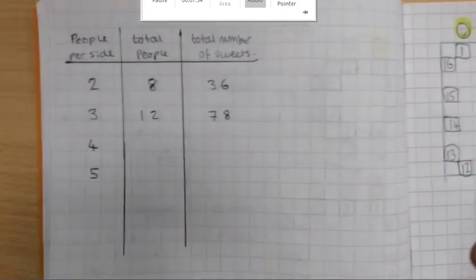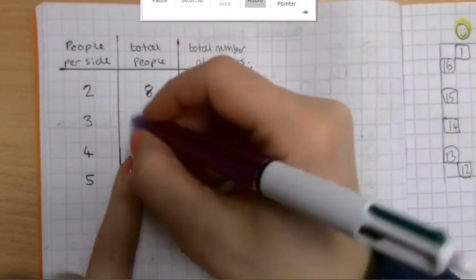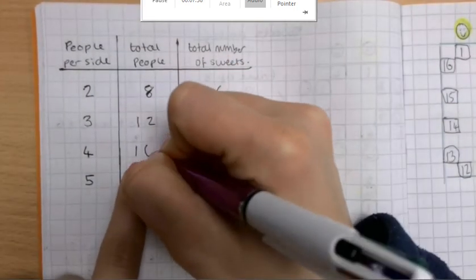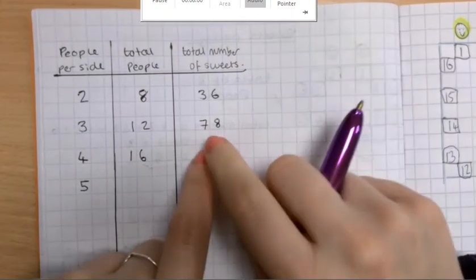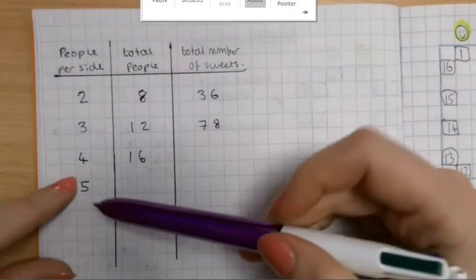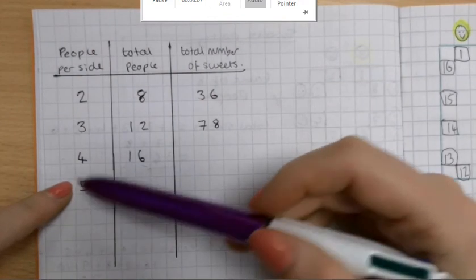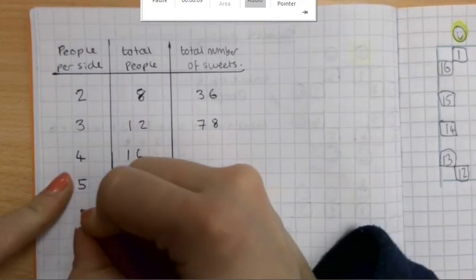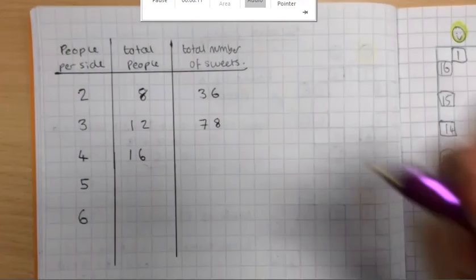And once you've added those numbers up, you're going to go back over to this table. Now, the total number of people, we know that. That's going to be 16. And you're going to add in the total number of sweets here. Okay, after you've done that, try and do the same with 5 people per side. If you finish that as well, maybe we could do the same with 6 people per side.